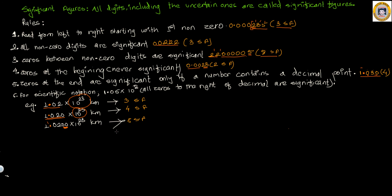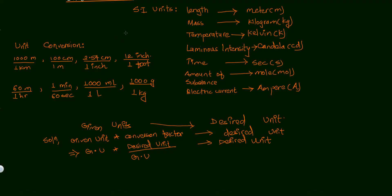If we add yet another zero, since zeros after the decimal point count, we have five significant figures. In this way we can find the significant figures of given numbers. This is very important from an examination point of view.